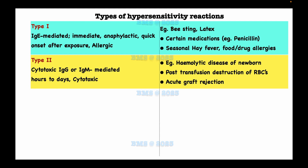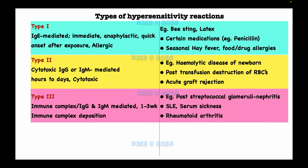We find type 2 hypersensitivity reactions in hemolytic disease of the newborn, following blood transfusion of red blood cells incompatible with the host, and in some acute graft rejection cases. Type 3 hypersensitivity reaction is called immune complex hypersensitivity.